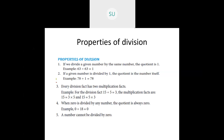Third property: every division fact has two multiplication facts. For the division fact 15 divided by 5 equals 3, the related multiplication facts are: 15 equals 3 times 5, and 15 equals 5 times 3. The same three numbers — 15, 5, and 3 — are related by both multiplication and division. Every division fact has two corresponding multiplication facts.